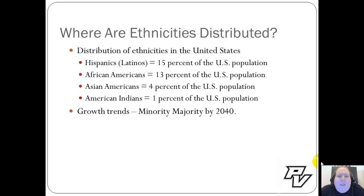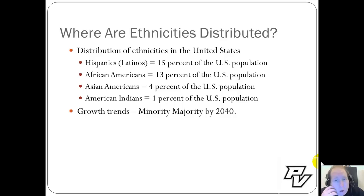Based on current growth rates — going back to when we talked about population growth — it's expected that the United States by around the year 2040 will become what's known as a minority-majority country, meaning there is no one group that holds over 50% of the ethnic grouping of the entire country. Every group will be under 50%, expected by about the year 2040 if current growth trends hold.